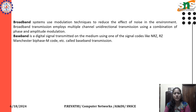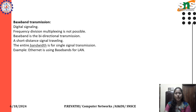Baseband is a digital signal transmitted on the medium using one of the signal codes like NRZ, RZ, Manchester code, etc., called baseband transmission. Baseband transmission is used in digital signaling; frequency division multiplexing is not possible. Baseband is bidirectional transmission with short distance signal traveling. The entire bandwidth is used for single signal transmission. Example: Ethernet uses baseband for LAN.